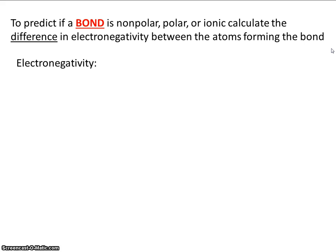So electronegativity, that's a big word, but it's really quite simple. Electronegativity is a measure of how much an atom likes electrons, or the tendency of an atom to attract, or to pull, electrons towards itself.